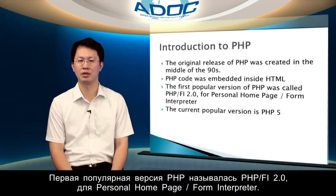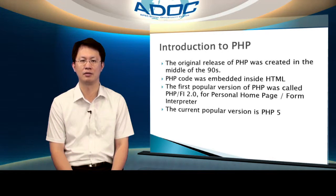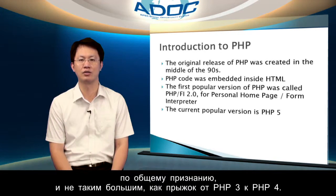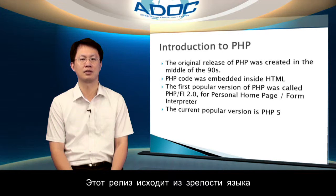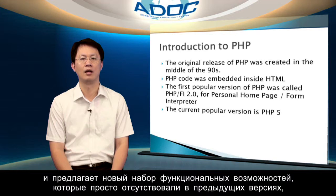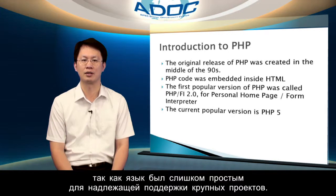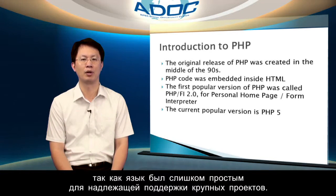The first popular version of PHP was called PHP-FI 2.0, for Personal Homepage Form Interpreters. The current version is PHP 5. PHP 5 was a big step forward for the language, although admittedly not as big as the jump from PHP 3 to PHP 4. The release is focused on language maturity and offers a lot of new functionalities that have simply been missing from previous versions, because the language was a little too simple. PHP 5 was a big step forward to properly support larger projects.